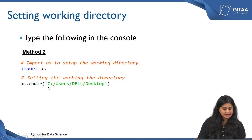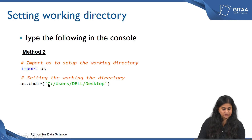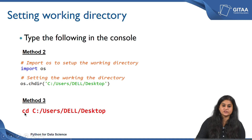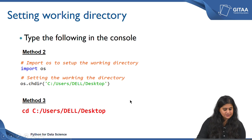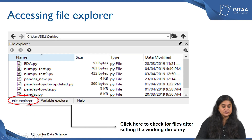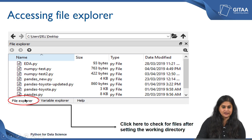Within parentheses you can give single or double quotes, then copy the entire path from your directory and paste it here, or you can also type it out. The third method is using the command cd, which also means change directory — you give a space after the command and then give the path. This is how you set a working directory. Once you have set the working directory, if you have any folders, sub-folders, or other files inside the working directory, all of that will be displayed under file explorer.